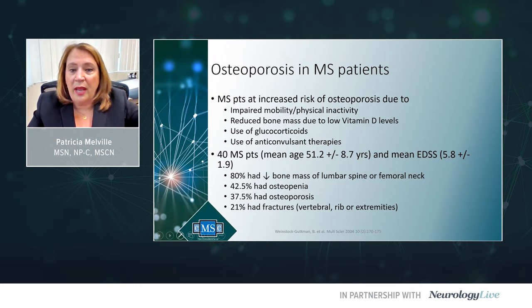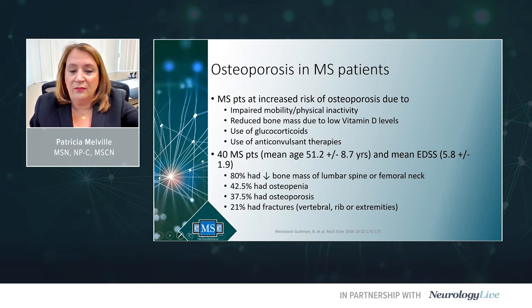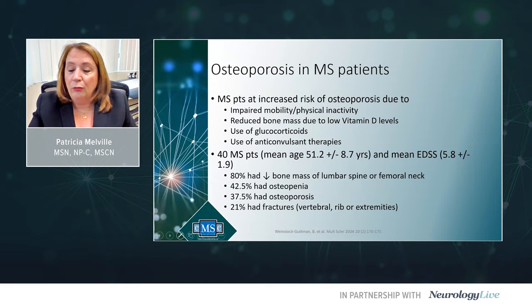MS patients are at increased risk of osteoporosis due to impaired mobility, physical inactivity, lack of weight-bearing activities, low vitamin D levels, use of steroid therapy, and use of anticonvulsant therapies. In a study of 40 male MS patients with a mean age of 51.2 years and mean EDSS of 5.8, 80% had decreased bone mass of the lumbar spine or femoral neck, 42% had osteopenia, 37% had osteoporosis, and 21% had fractures — either vertebral, rib, or extremities.